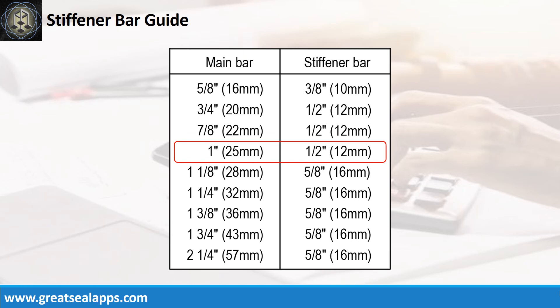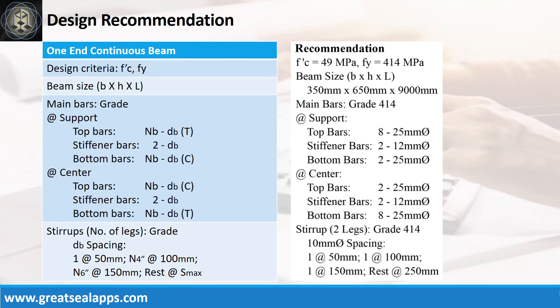For 25 mm main bars, use 12 mm stiffener bars. Design recommendations: f'c equals 49 MPa, fy equals 414 MPa, beam size 350 mm by 650 mm by 9000 mm. Main bars of grade 414 — at support: top bars 8 pieces of 25 mm bar, stiffener bars 2 pieces of 12 mm bar, bottom bars 2 pieces of 25 mm bar. At center: top bars 2 pieces of 25 mm bar, stiffener bars 2 pieces of 12 mm bar, bottom bars 8 pieces of 25 mm bar. Stirrups: 2 legs of grade 414, 10 mm bar, one at 50 mm, one at 100 mm, one at 150 mm, rest at 250 mm.